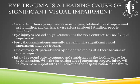Eye trauma is a leading cause of significant visual impairment, with about 2.4 million eye injuries occurring each year — bilateral visual impairment in 2.3 million people and unilateral visual loss in about 19 million people annually. It's the second cause after cataract as the most common cause of visual impairment, with 40,000 patients left with significant visual impairment after trauma. One in every 20 patients seen by us is because of an injury, and it is also becoming the highest cause of hospitalization.